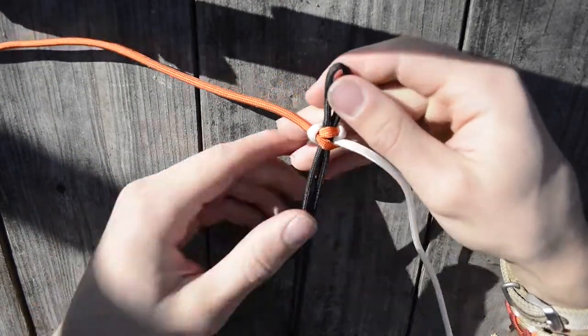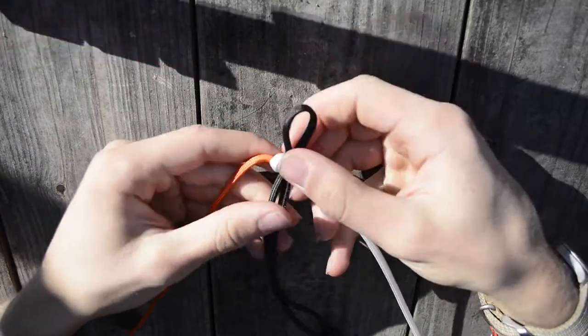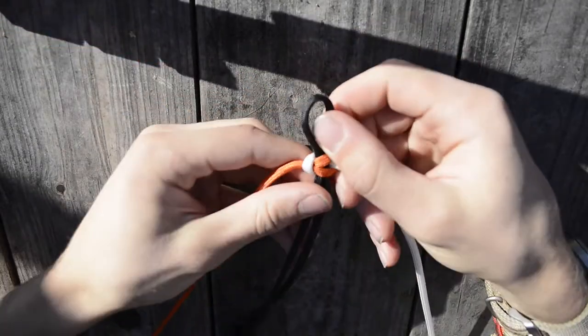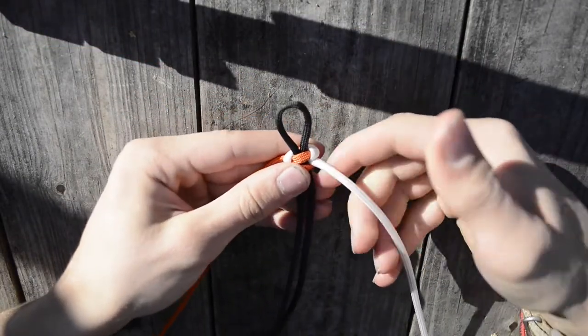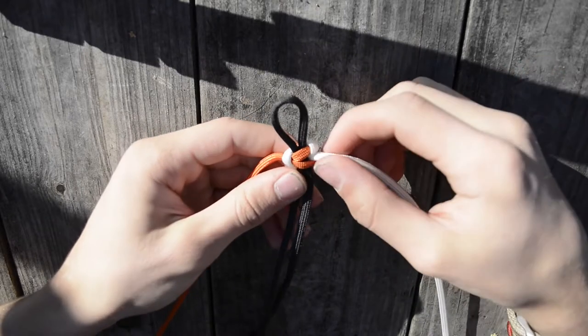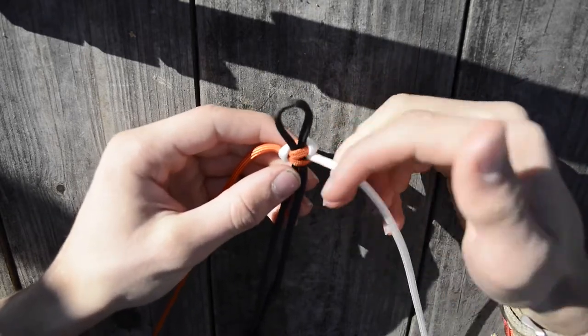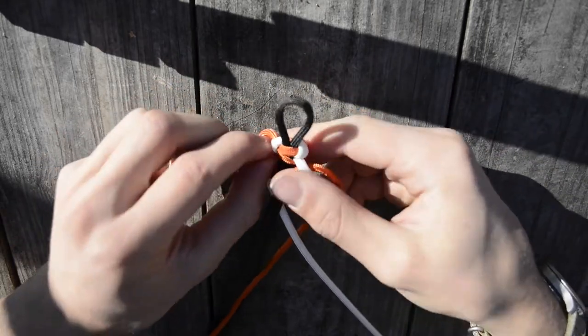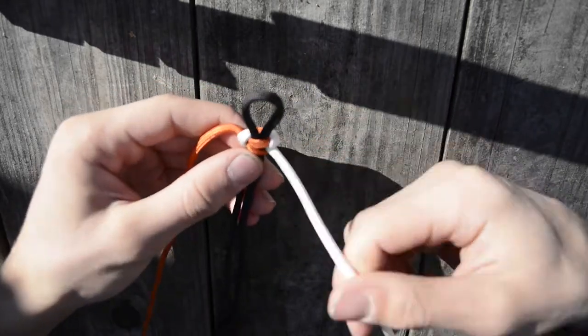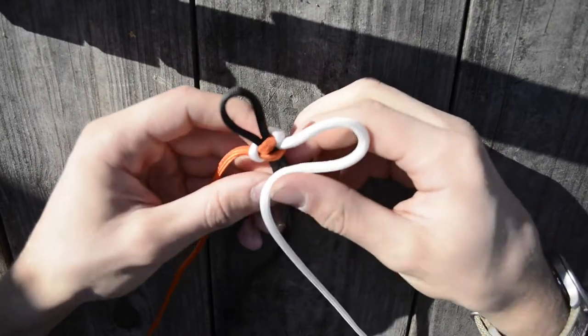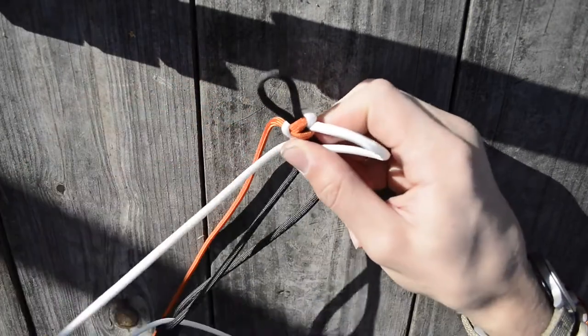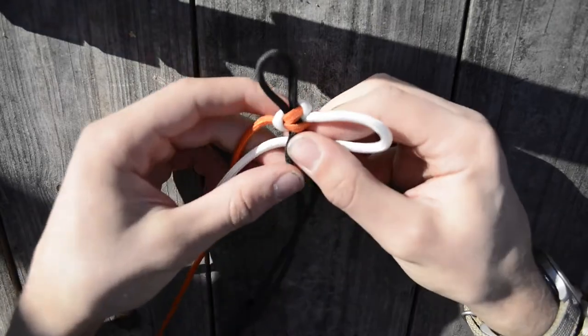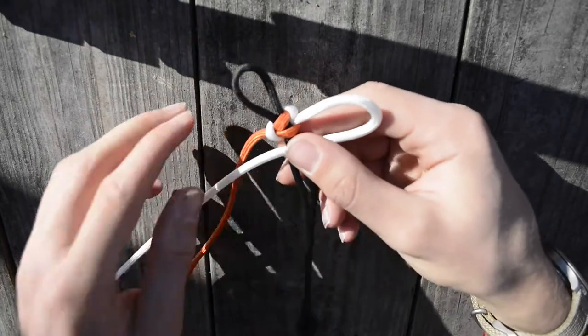Now let's actually get to the dragon or ready to start this weave. And to begin, to start off with it, we want to take your accent color or this is basically the non-main weave color. So if you were to continue to do a Cobra, this would be like your main weave color. So this is your accent color. You're going to want to take it and put it across and behind this main or this core strand.